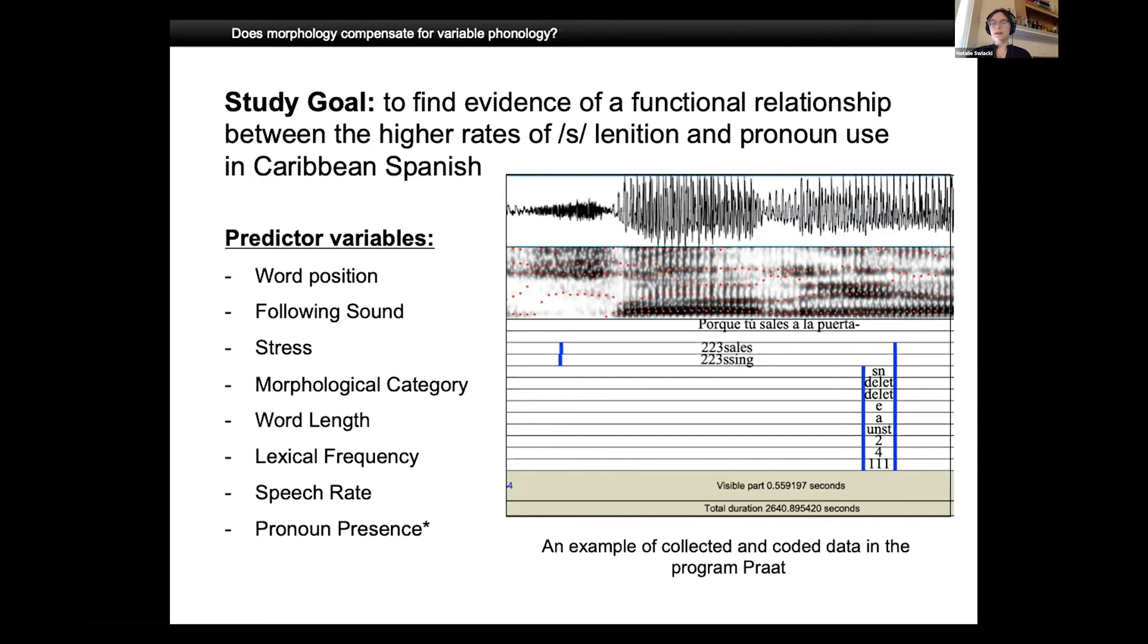The predictor variables included in the analyses were word position, following sound, stress, morphological category, word length, lexical frequency and speech rate, which are all just predictor variables that have been shown by previous studies to influence the expression of S. And then I also included pronoun presence as a factor when considering the verbal data.